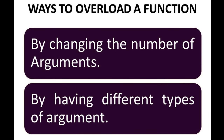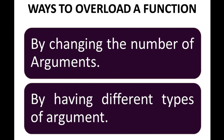While defining more than one function with the same name, function overloading can be implemented in two ways: either by changing the number of arguments used in the function, or by having different types of arguments in the function.